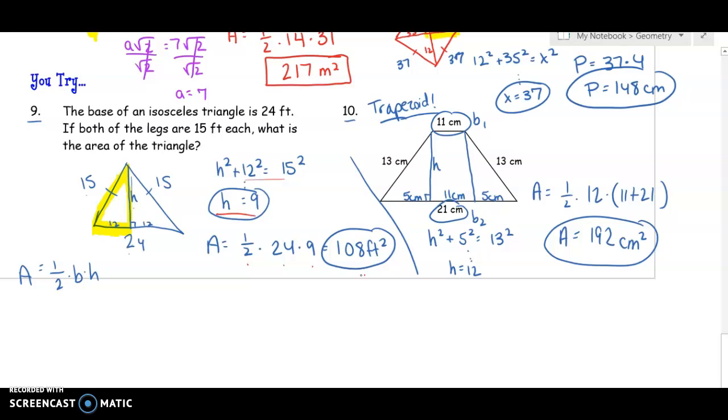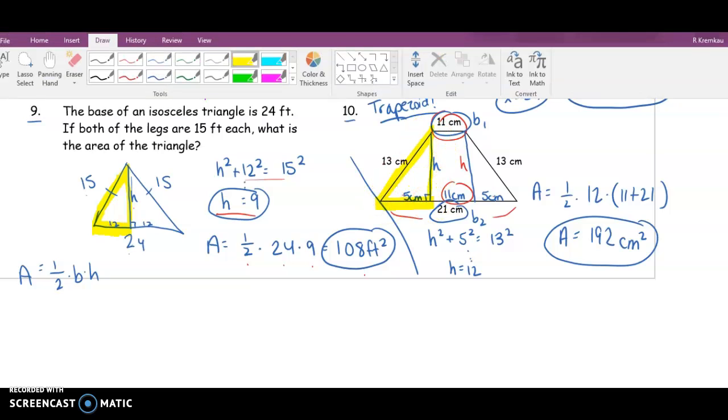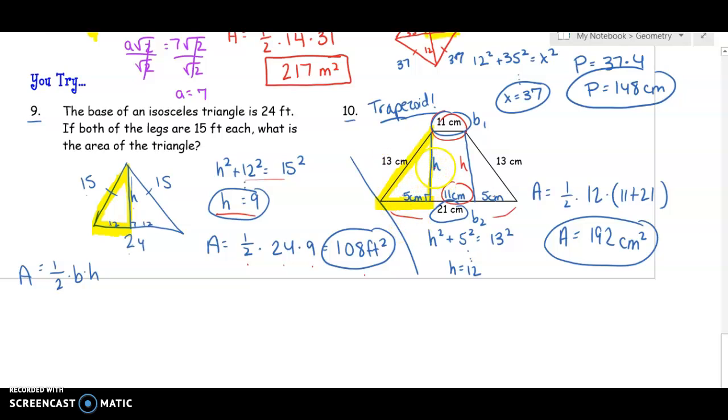For the next one, it's a trapezoid. It's kind of like number 6 above. You're going to need to draw in 2 heights. And so if this piece is 11, the piece across from it has to be 11 because it creates a rectangle. If this whole bottom is 21, we've used up 11. That means there's 10 left. So each of these pieces is 5. 5 and 5 makes 10. Then what you're going to do is focus on one of the right triangles. And if you notice with that, you have 2 out of the 3 sides. So you're going to do H squared plus 5 squared equals 13 squared. Solve for the height, you get 12. Once you know the height and you know the two bases - the bases are the two parallel sides, so 11 and 21 - plug it in. 1 half times height times base 1 plus base 2. You're going to get 192 square centimeters.